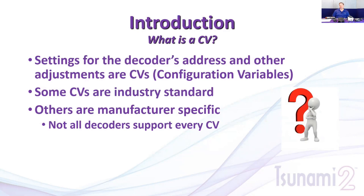We make those adjustments using CVs — configuration variables. Some are industry standard: the short address is stored in CV1, and the long address in CV17 and CV18. Others are manufacturer specific. Soundtraxx was first with sound decoders in model railroading, so we had to create manufacturer-specific CVs for volume. On our Tsunami, Tsunami 2, and Econami products, CV128 is the master volume, CV129 is the whistle, CV130 is the bell, and so on.